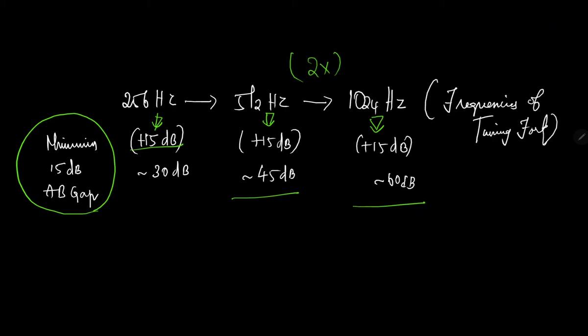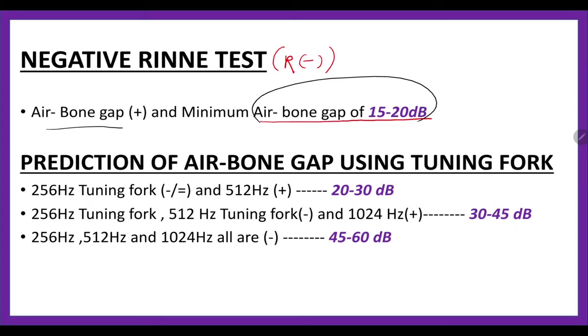This is what is emphasized there. Rather, this is basically just a trick. The same is emphasized here: 256 is negative and 512 is positive, then there could be 20 to 30 decibel air-bone gap. 256 and 512 are negative whereas 1024 is positive: 30 to 45 decibel air-bone gap. All three are negative tuning forks, then there could be 45 to 60 decibels of air-bone gap.